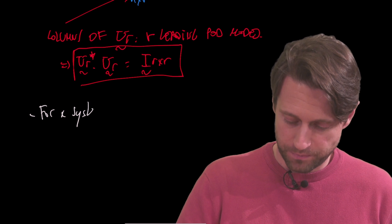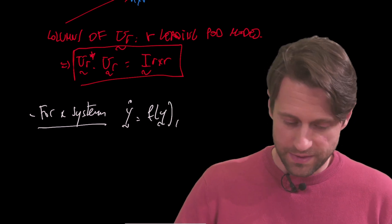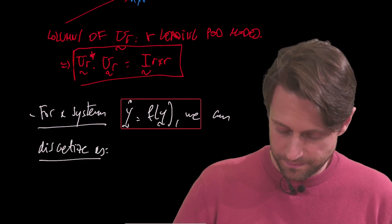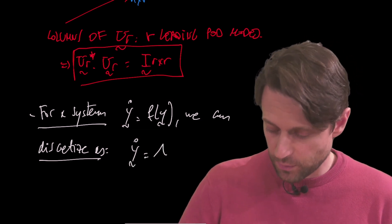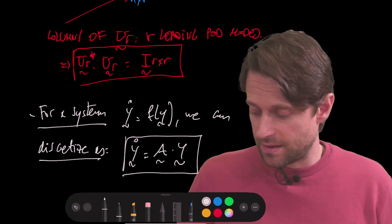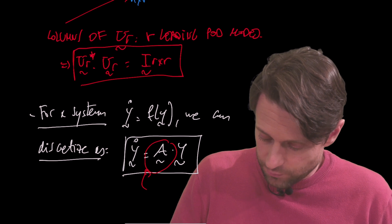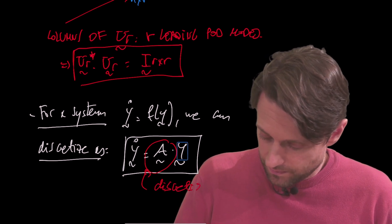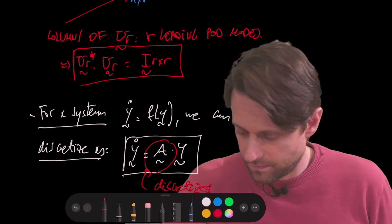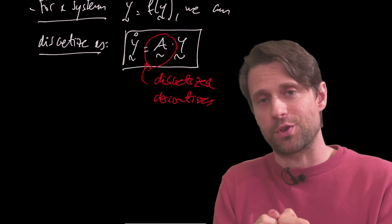For a system Y_dot, which is a function of Y, we can discretize: Y_dot equals some linear operator A times Y. As we did before for the example of the diffusion equation, here A would be basically the discretized derivative operator. So A here would be the discretized derivatives.